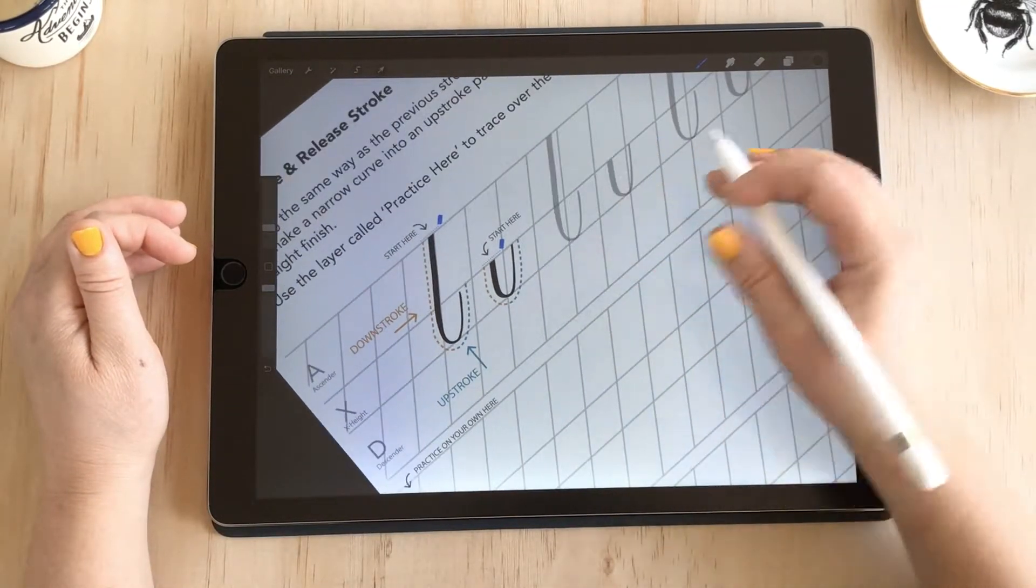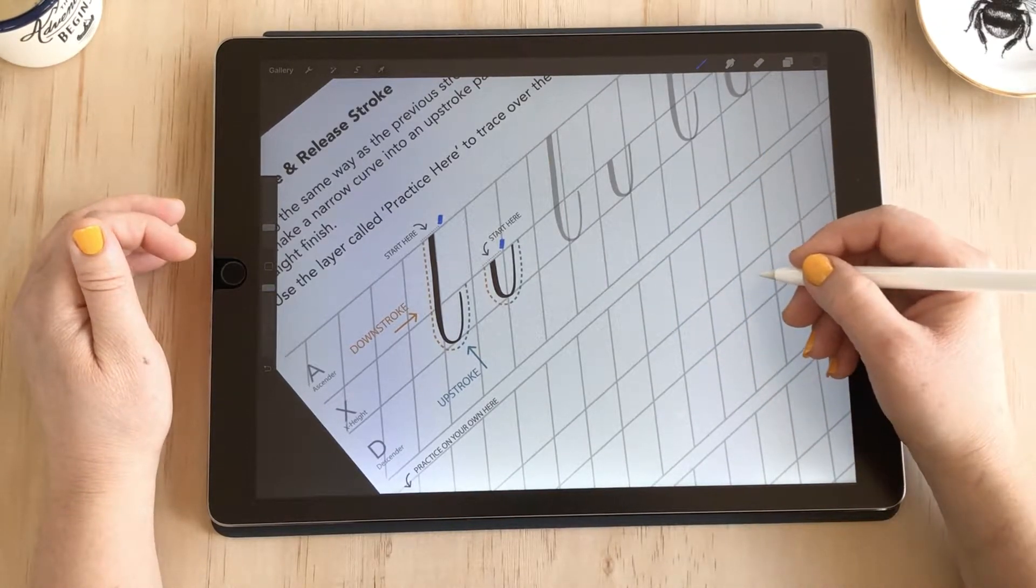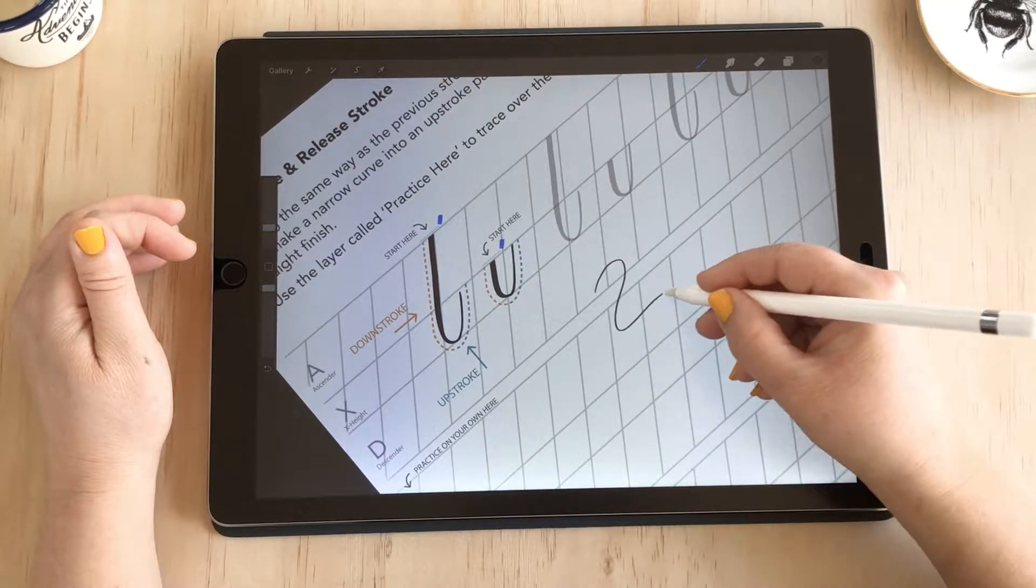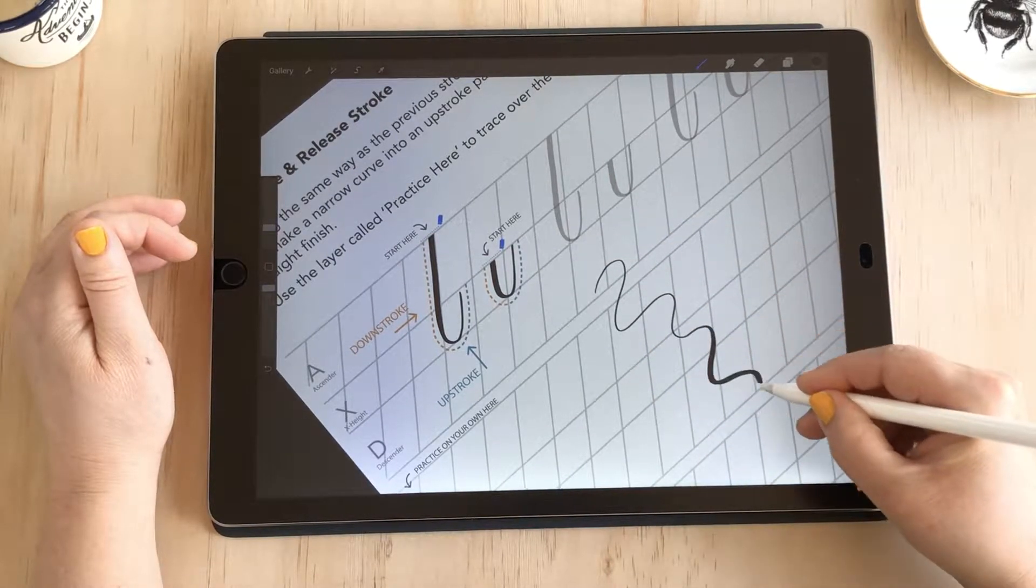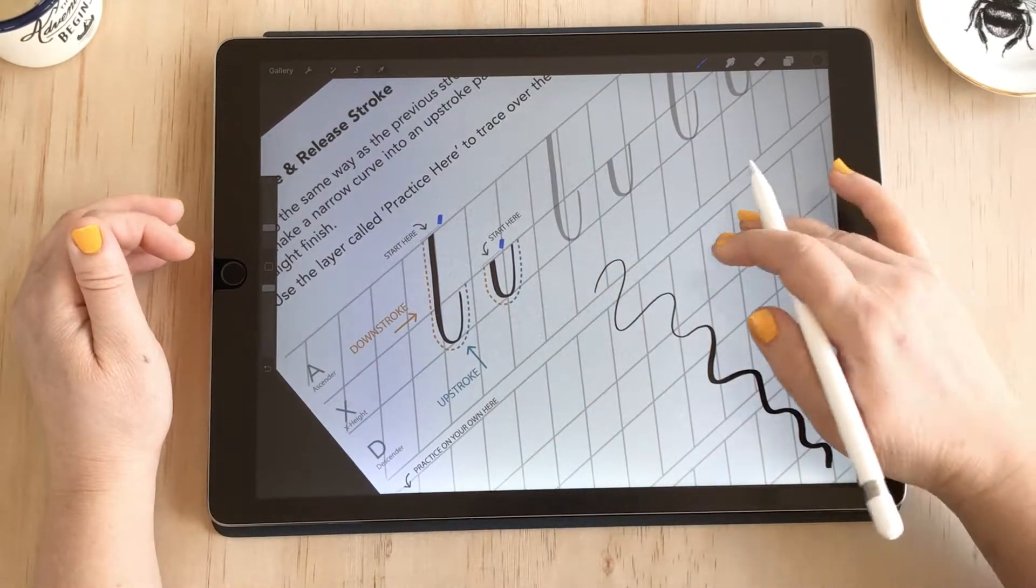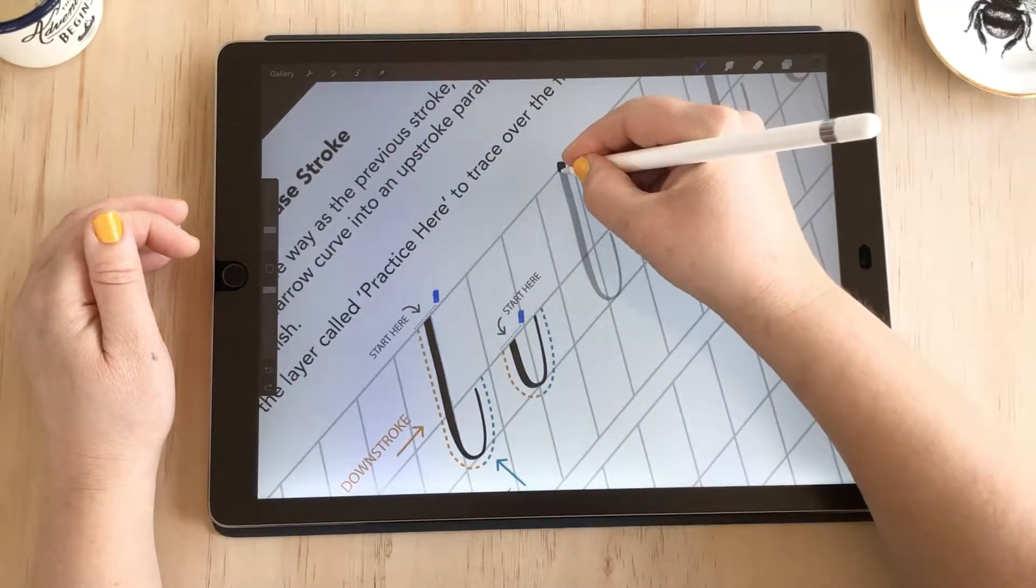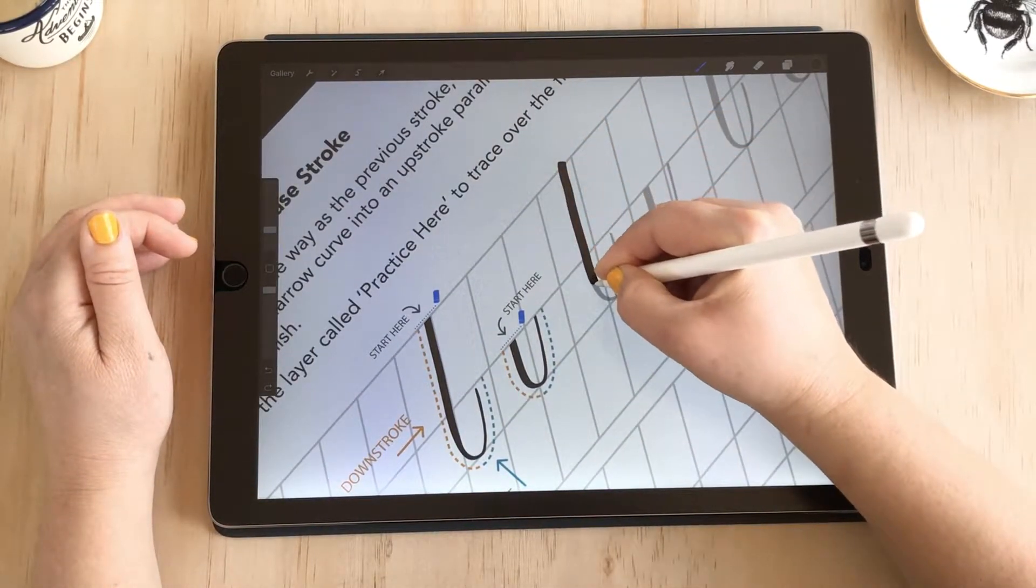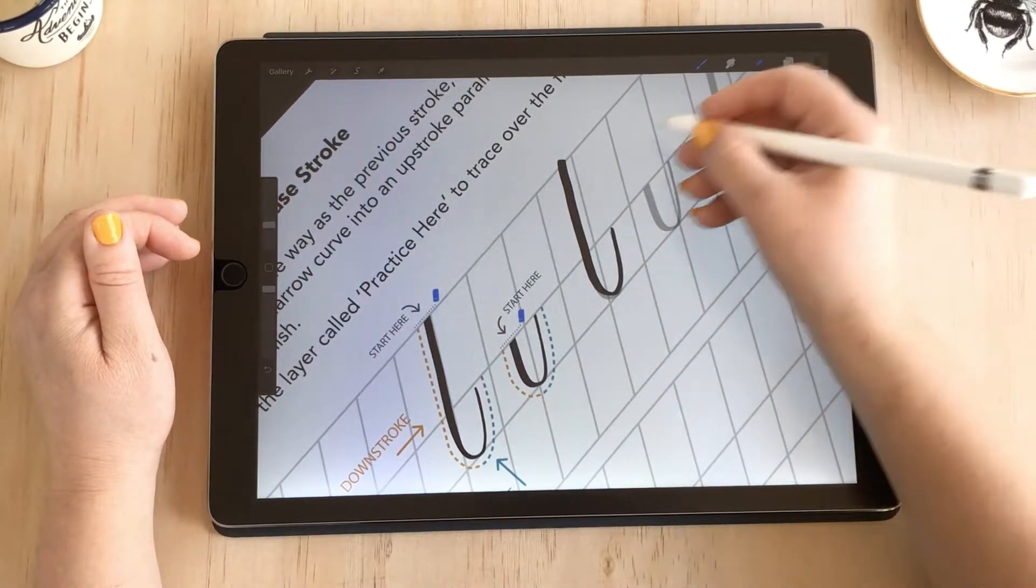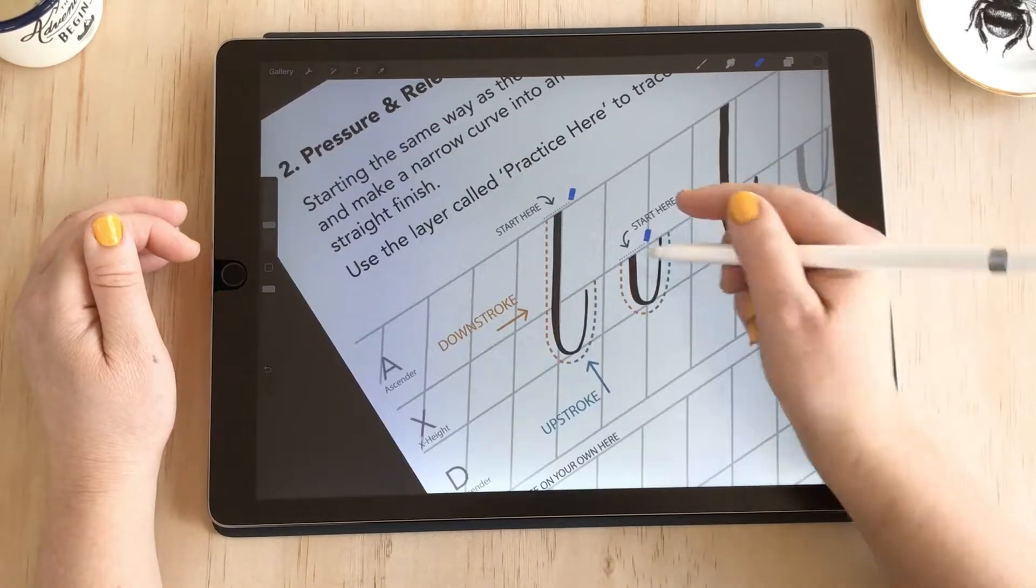You may have already seen in your own exploring yesterday that this brush is pressure sensitive. When we use light pressure it's nice and thin, and when we increase our pressure it gets thicker. That's an attribute of copperplate calligraphy—these contrasted strokes. You can start with heavier pressure, then lighten up as you near the baseline here and follow it around with lighter pressure to end with a thin stroke. Then change to your eraser and tidy that stem at the top.